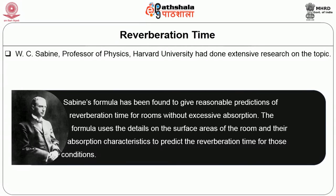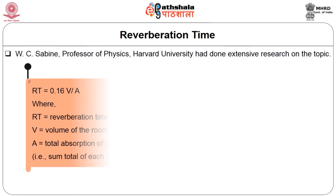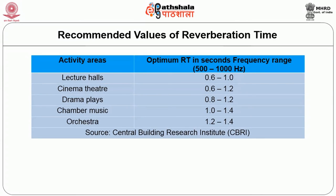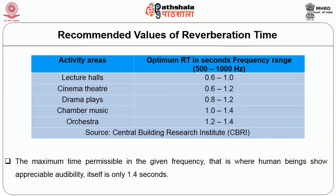Sabine's formula gives reasonable predictions of reverberation time for rooms without excessive absorption. The formula uses surface areas of the room and their absorption characteristics. RT = 0.16 V / A, where RT is reverberation time, V is the volume of the room in cubic meters, and A is the total absorption of room surfaces in meter-square sabins. The sum of each area multiplied by the absorption coefficient of that area gives A. The maximum permissible reverberation time in the frequency range where human beings show appreciable audibility is only 1.4 seconds.